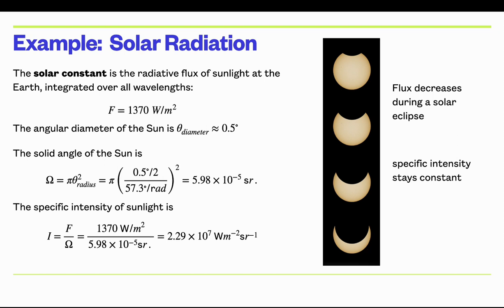From Mercury, the sun appears about three times larger in diameter — nine times the solid angle. So the flux from the sun on Mercury would be nine times larger, but the specific intensity is exactly the same. The sun would be larger in the sky, but the surface brightness is identical whether you're on Mercury, Earth, or even Pluto. So don't look at the sun on Pluto either — it's just as dangerous.